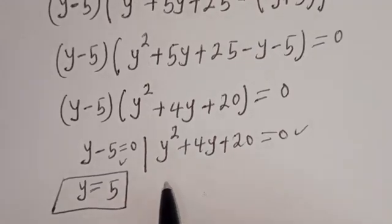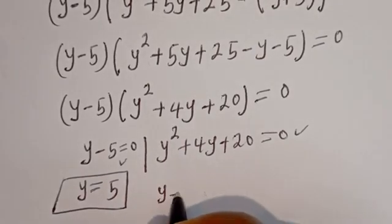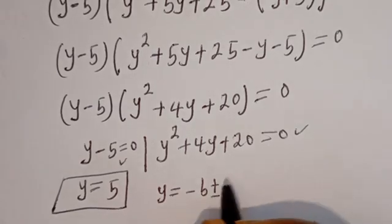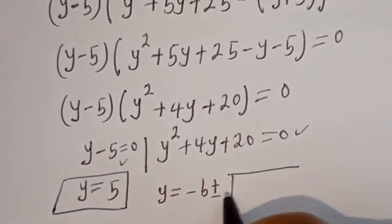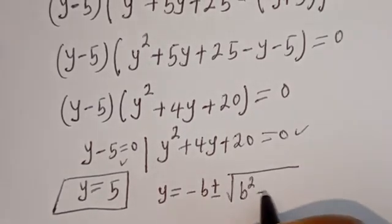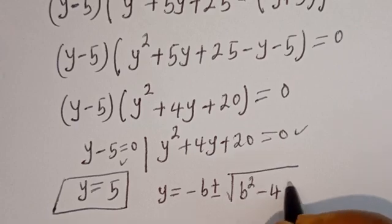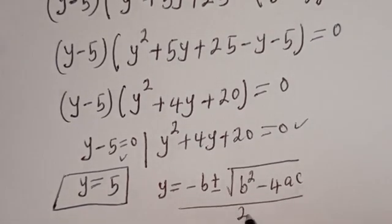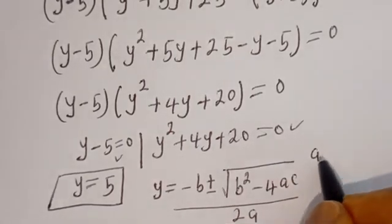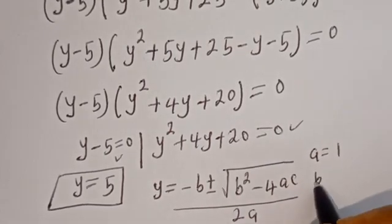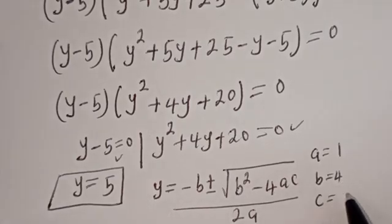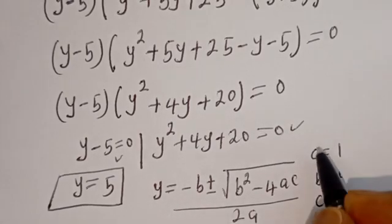The quadratic general formula gives Y equals negative B plus or minus square root of B squared minus 4AC, divided by 2A, where A equals 1, B equals 4, and C equals 20.